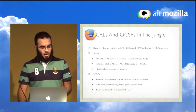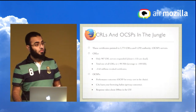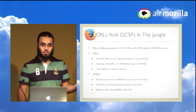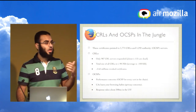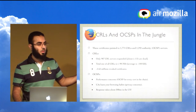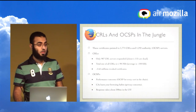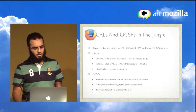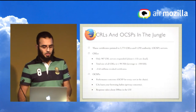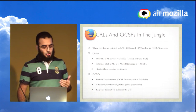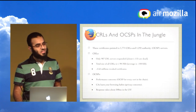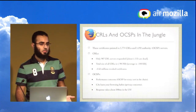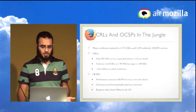The total size of all CRLs was about 98 megabytes, meaning if you want to verify all the Alexa top 1 million sites you'd need to download an extra ~100 MB. The average CRL size was about 100 kilobytes, and there were 2.65 million certificates that had been revoked by these CRLs — a huge number.